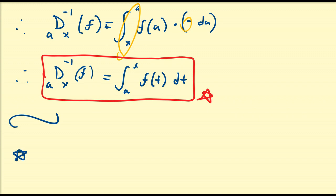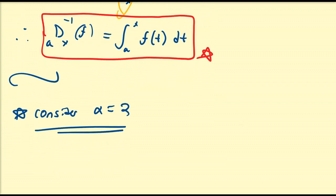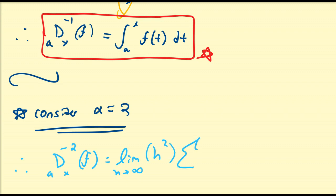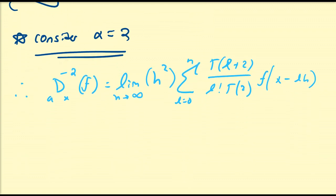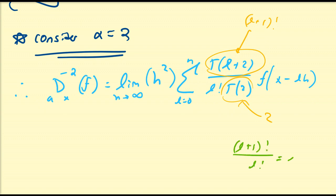So we've proven that the negative first derivative is the first integral of a function. Now we're going to consider alpha equal to 2. Using the same definition, d_ax of minus 2 of f equals the limit as n goes to infinity of h squared times the sum from l equals 0 to n of gamma(l plus 2) all over l factorial times gamma(2) times f of x minus lh. Notice that gamma(l plus 2) equals (l plus 1) factorial, so (l plus 1) factorial over l factorial equals l plus 1.